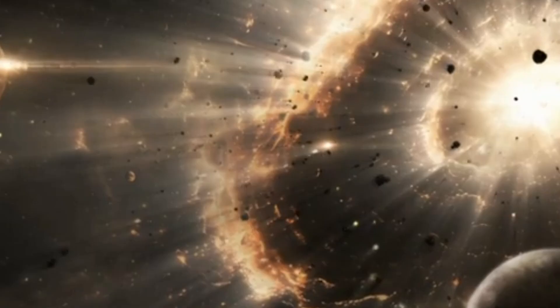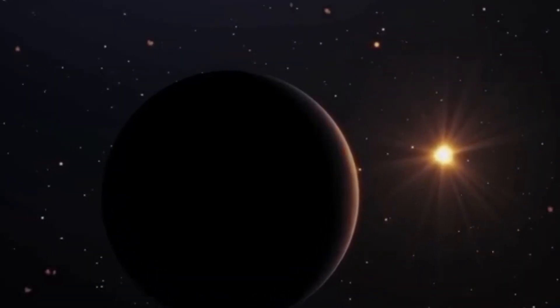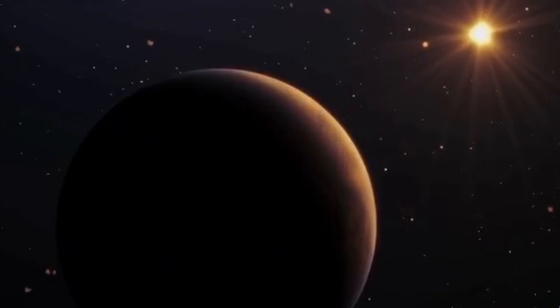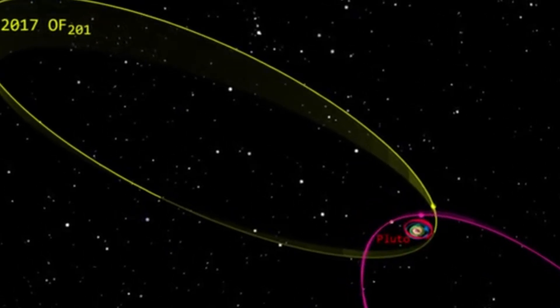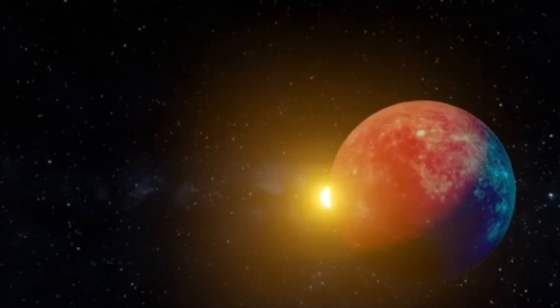The solar system has a new member. Astronomers have recently discovered a previously unknown dwarf planet in the outer regions of our home world. Named 2017 OF201, the celestial body immediately attracted attention with its highly unusual orbit.